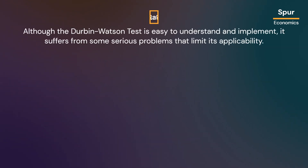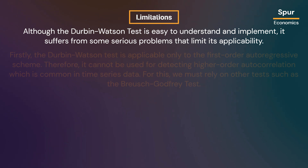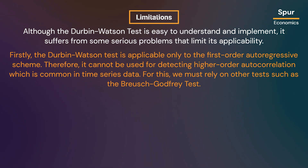Although the Durbin-Watson test is easy to understand and implement, it suffers from some serious problems that limit its applicability. Firstly, the Durbin-Watson test is applicable only to the first-order autoregressive scheme, so it cannot be used for detecting higher-order autocorrelation, which is common in time series data. For this, we must rely on other tests such as the Breusch-Godfrey test.